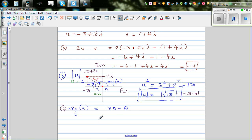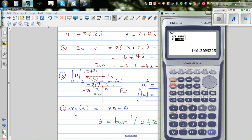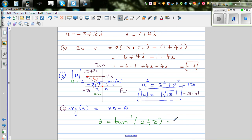Theta is tan inverse of opposite divided by adjacent, that is 2 divided by 3. Let me go shift tan, bracket 2 divide by 3, close the bracket. There we go, 33.69. This is 33.69.